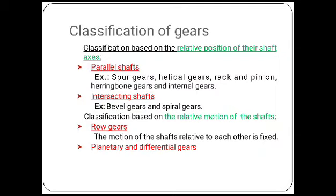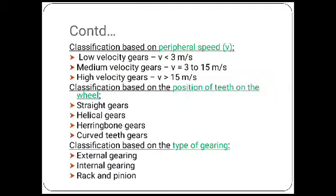The next classification is based on the relative motion of the shaft — row gear and planetary gear. Then classification based on peripheral speed: low velocity gear, medium velocity gear, and high velocity gear, based on different ranges of velocities. Classification based on the position of teeth on the wheel: spur gears, helical gears, herringbone gears, and curved teeth gears.